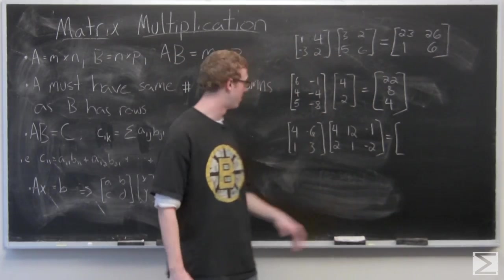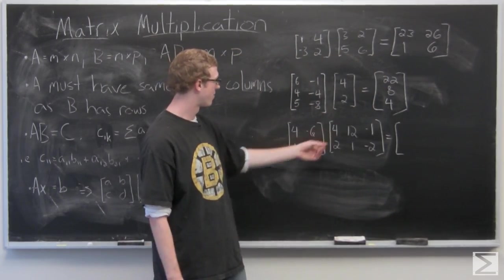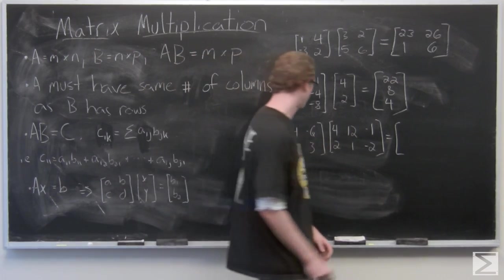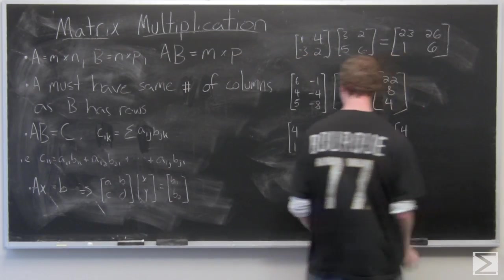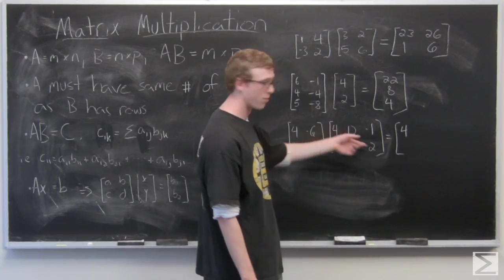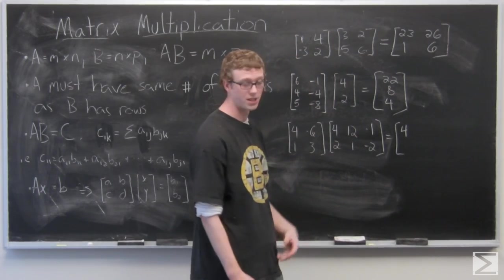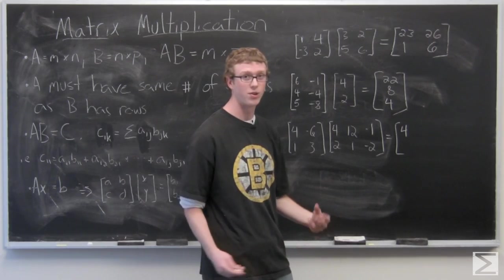But let's just go ahead and multiply out here. 4 times 4 plus negative 6 times 2. And I'm just going to go right through and fill in these entries. You can try it on your own and see what the answer is.